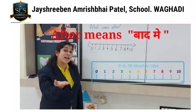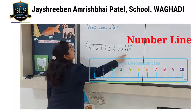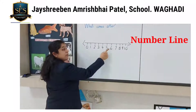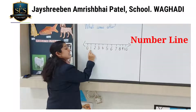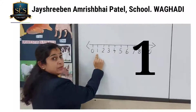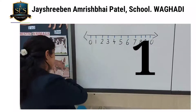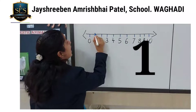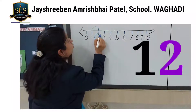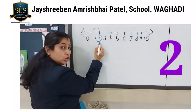After matlab baad ka number. So children, this is the number line. We will search where is number 1. Can you tell me where is number 1? Yes, this is number 1. So which number comes after number 1? After matlab baad mein. So which number will come after 1? Number 2. Van ke baad kaunsa number aata hai? Number 2.